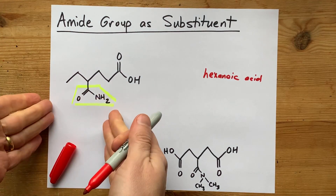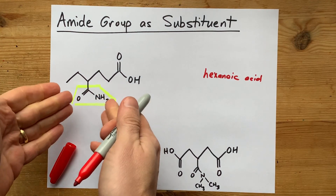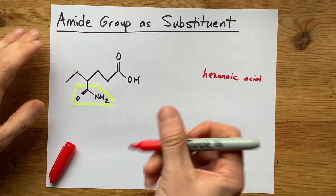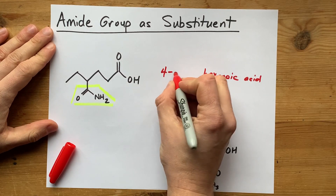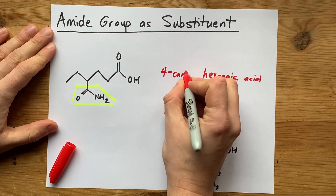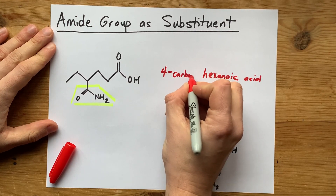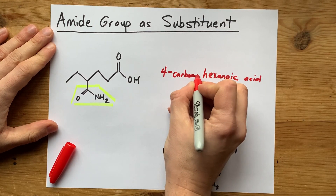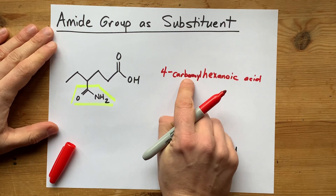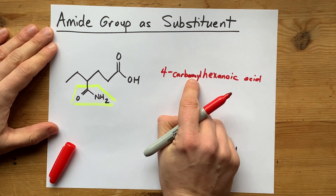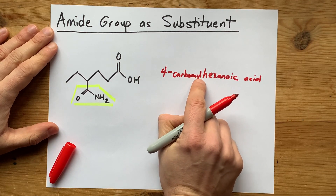But how do you name it? Well, this chunk here is actually called a carbamoyl — C-A-R-B-A-M-O-Y-L.